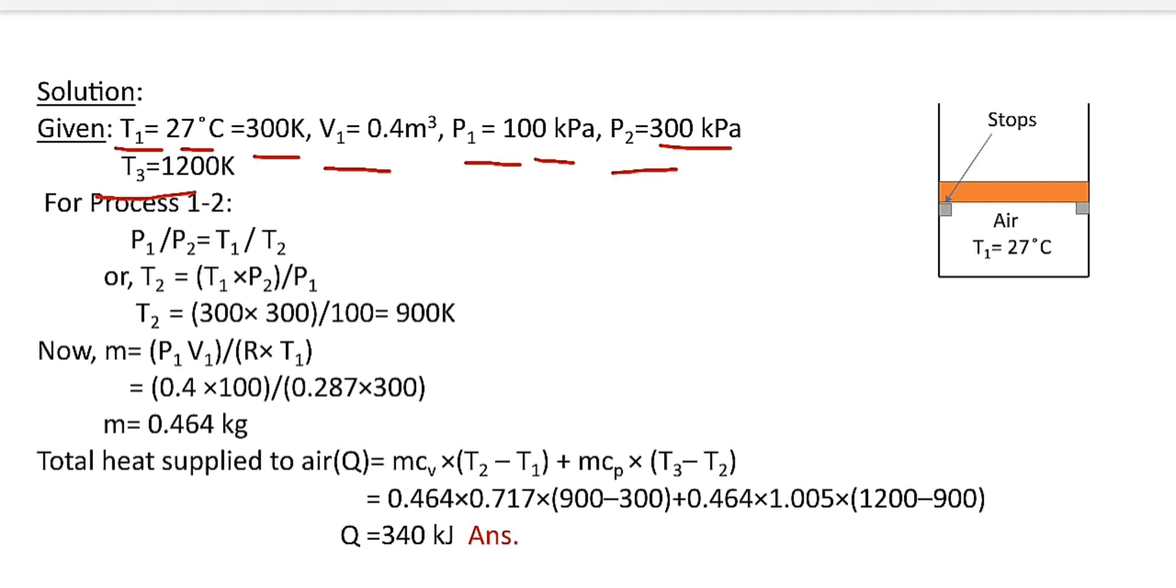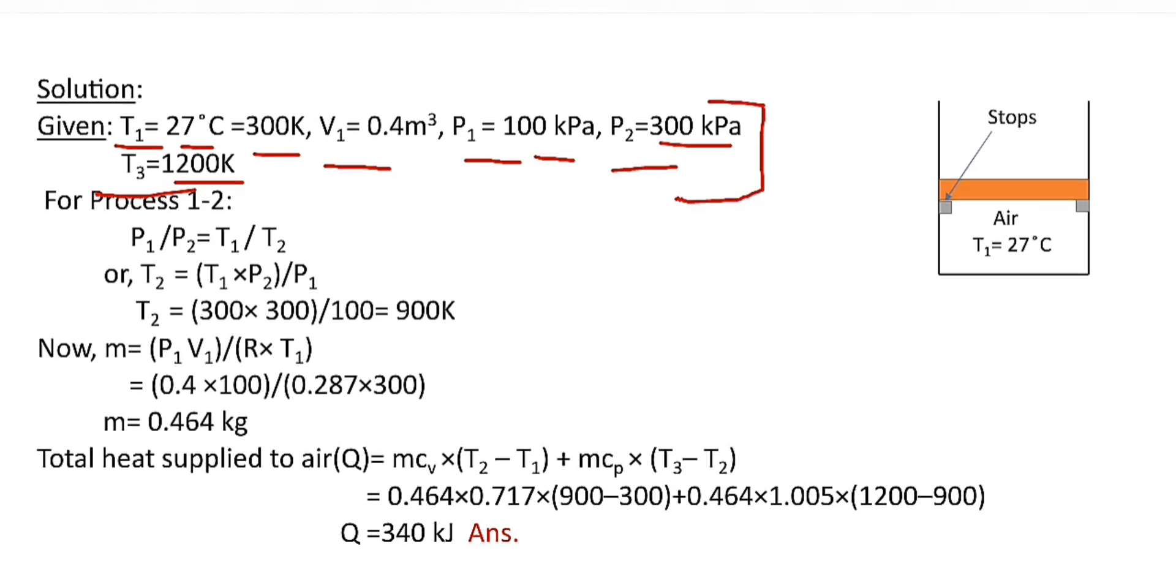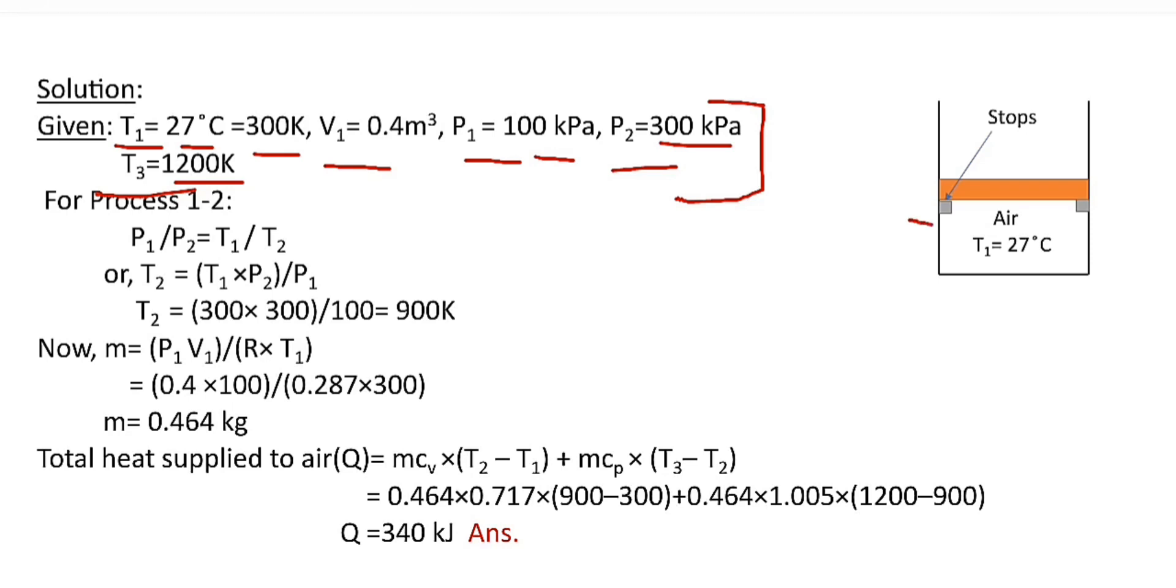T3 is final temperature of air after the addition of heat, and it is equal to 1200 K. All these values are given in the question. Since the piston is initially at rest on the set of stops and 300 kPa pressure is required to lift this piston from the stop...